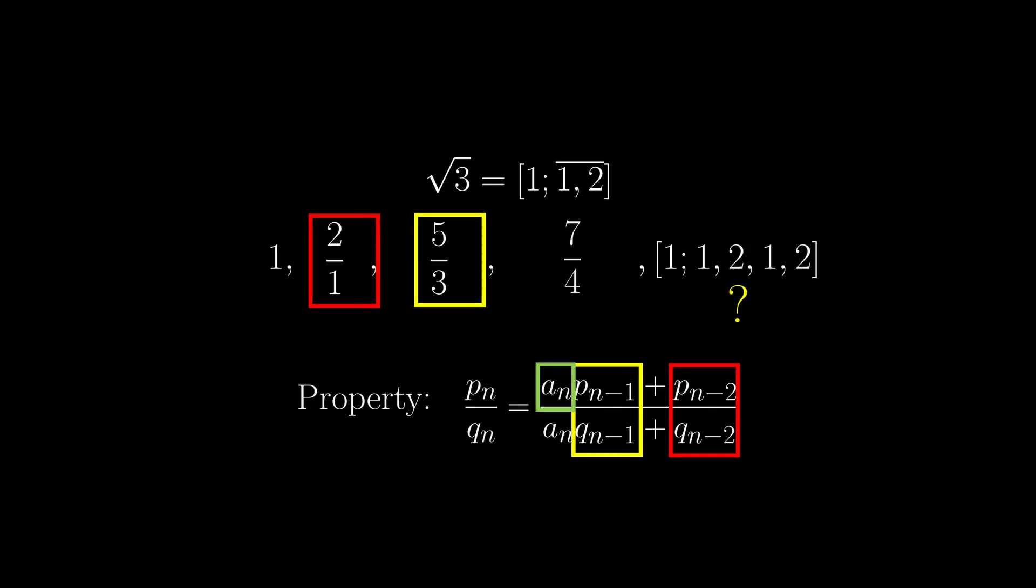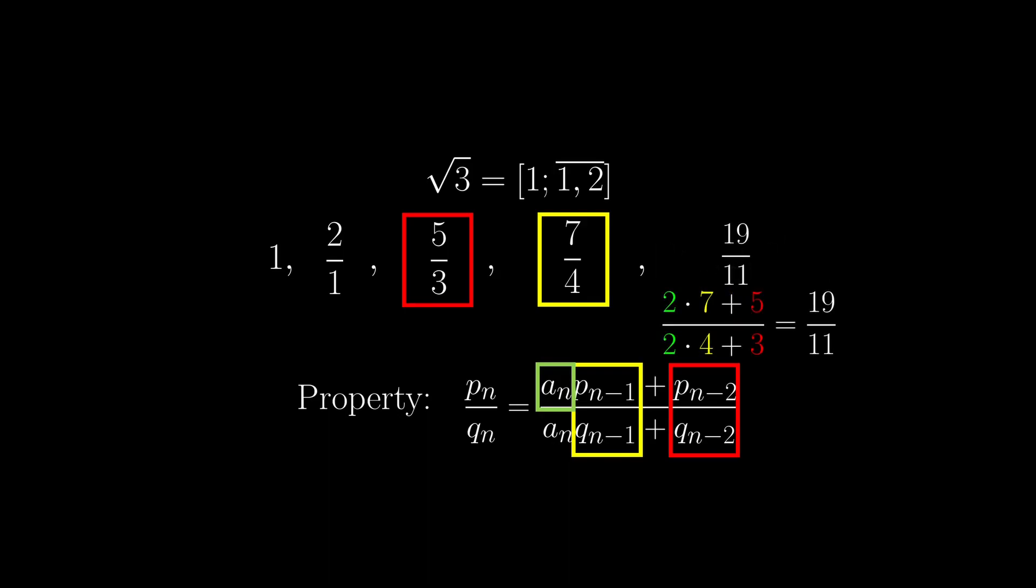For the next fraction, the previous two fractions would be shifted, while the last entry now becomes 2. Now we can apply the property and we can get 19 over 11 pretty easily.